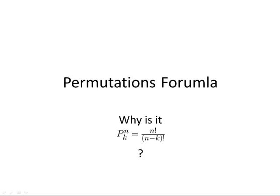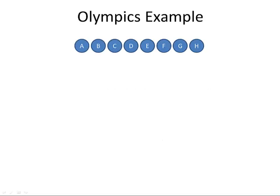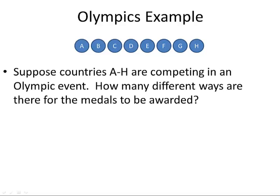This video is to show you why the formula for permutations is the one written here on the bottom of the screen. We are going to use an example with the Olympics. So let's say that there are eight countries, we'll call them A through H, and they're competing in an event.